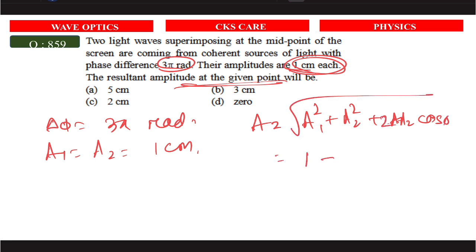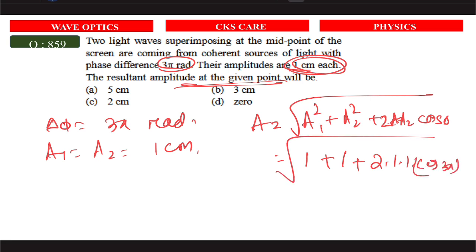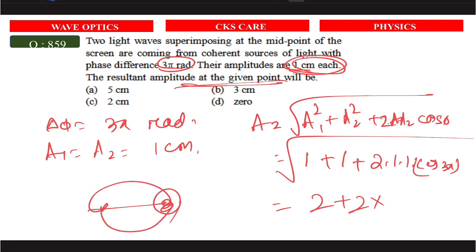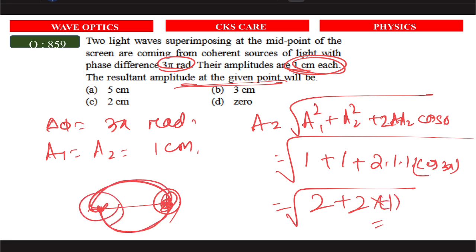Putting A1 = A2 = 1 and φ = 3π: A_resultant = √(1 + 1 + 2·cos 3π). Since 3π means cos(3π) = cos(π) = −1, so A = √(2 + 2·(−1)) = √(2 − 2) = √0 = 0. So the resultant amplitude is 0.